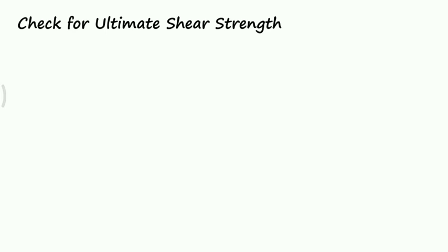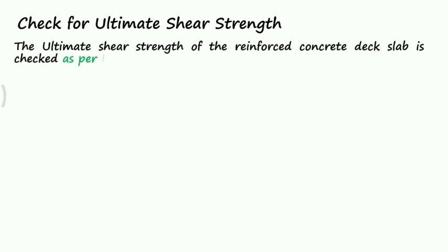Next is the check for ultimate shear strength. The ultimate shear strength of the reinforced concrete deck slab is checked as per IRC 112-10.3.2 page 88. VRDC equals 0.12 K times 80 rho 1 FCK raised to 0.33 times BW times D. All the terminologies are from IRC 112 page 88.